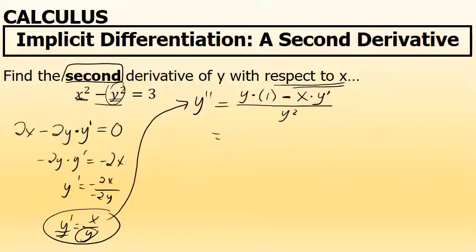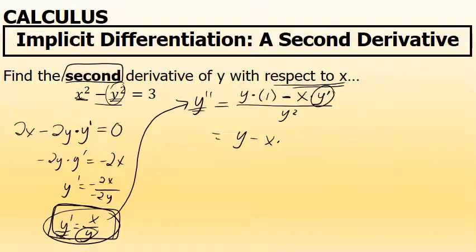At this point the second derivative is written as y times 1 minus x times y prime, all over y squared. Since y times 1 is y, I have y minus x times y prime over y squared. I don't want y prime in the final answer — I want the second derivative in terms of x and y only. So I'll substitute what y prime equals, which is x over y, in place of y prime.